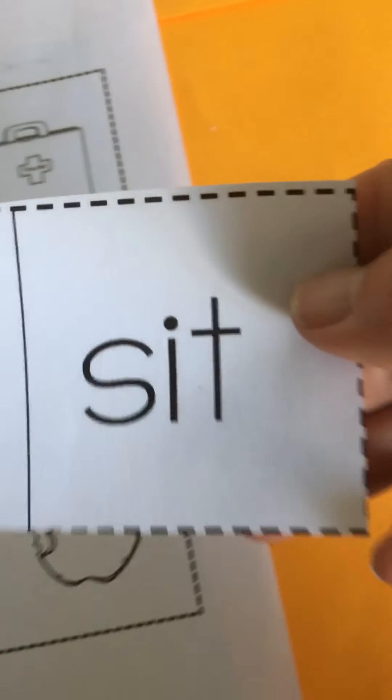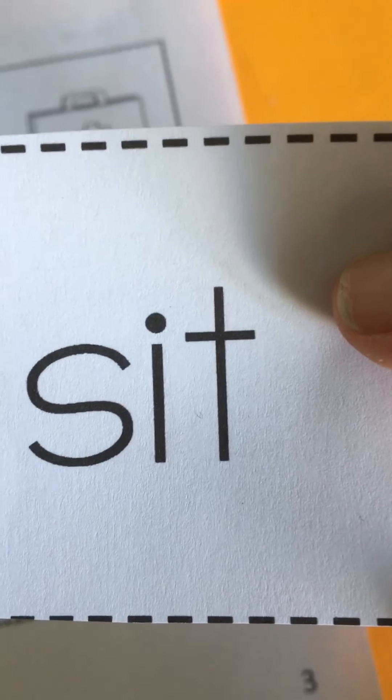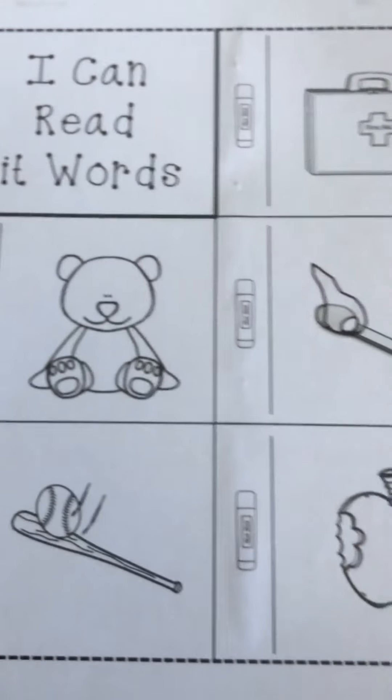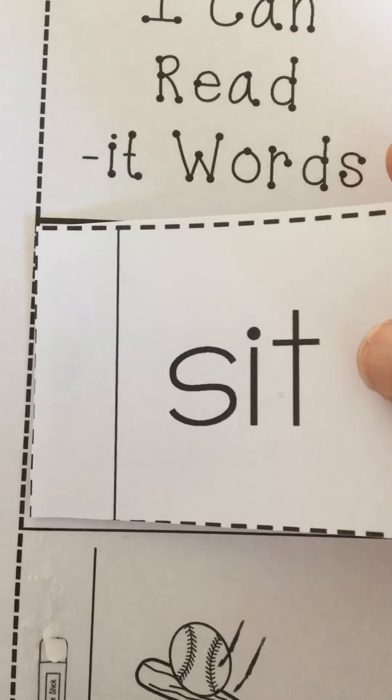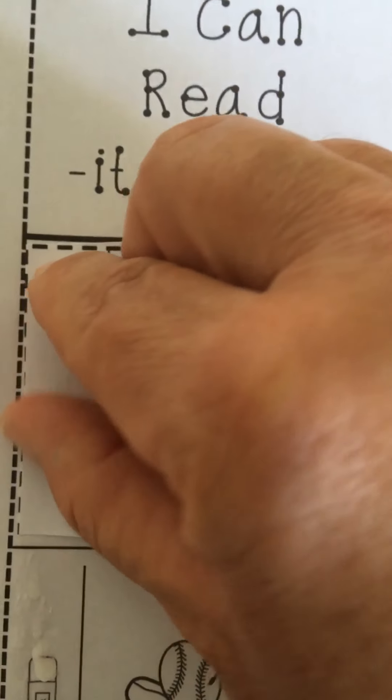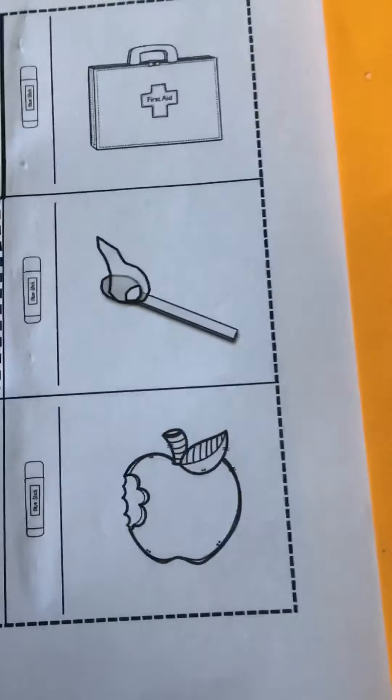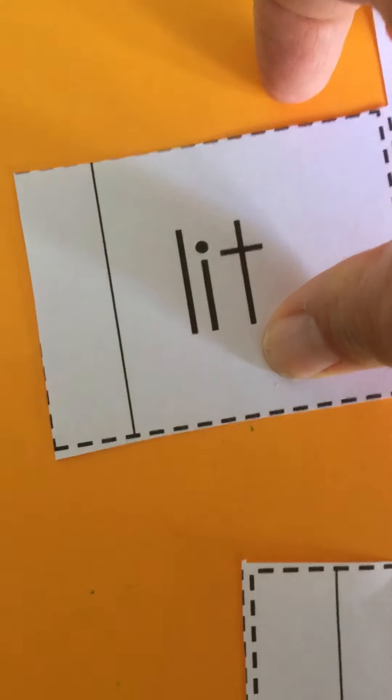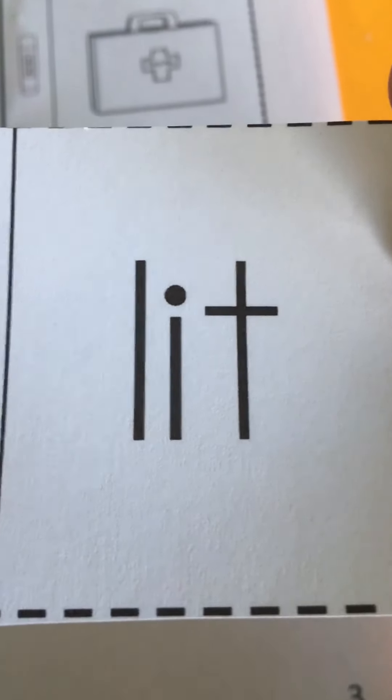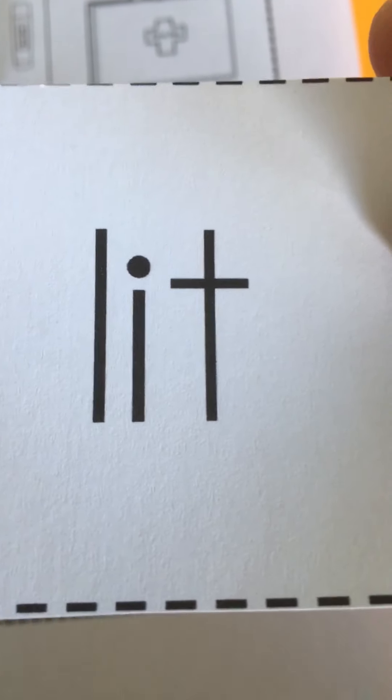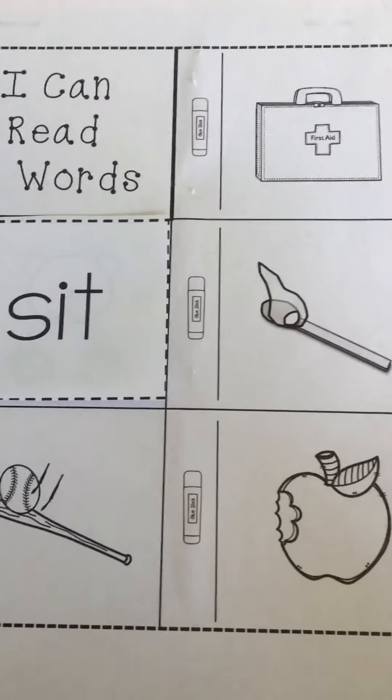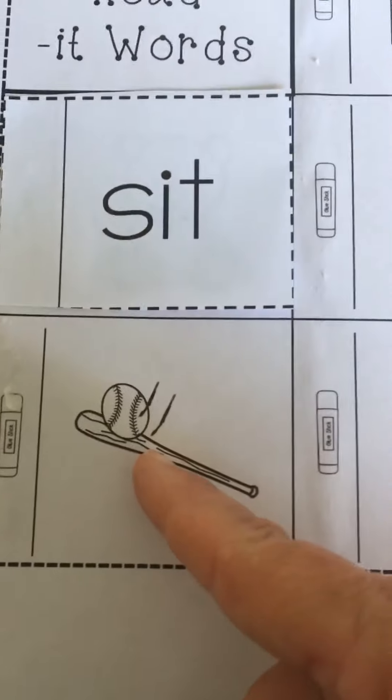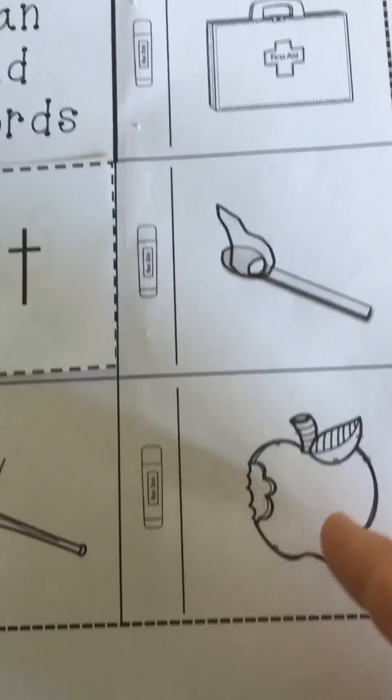Let's start out with sit. Which one is sit? It's the teddy bear, okay, the teddy bear sits. Sit. And let's look at the next, lit. When we light a match it is lit. Where's the match? Well it's not the baseball, it's not the apple, and it's not the first aid kit. This is the match that has been lit.